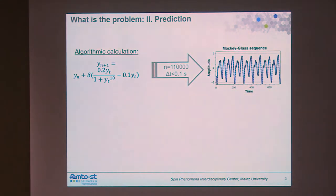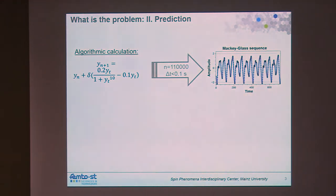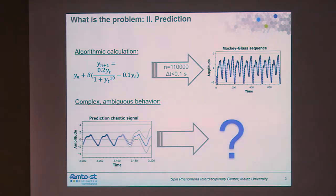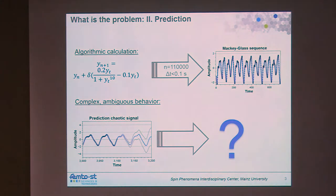These systems are difficult to grasp because from a fundamental point of view they are very simple — a nonlinear node with some connections. Even if you have a complete model with all parameters, you still don't understand it. This creates problems when applying these systems. For example, the Mackey-Glass sequence is generated by a very simple formula.